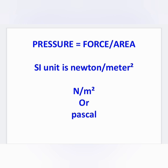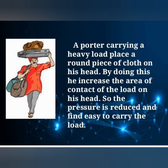Let us see some examples of this inverse variation of force and area. A porter carrying a heavy load places a round piece of cloth on his head. By doing this, he increases the area of contact of the load on his head. So, the pressure is reduced and he finds it easy to carry the load — area of contact is more and hence the pressure is less.